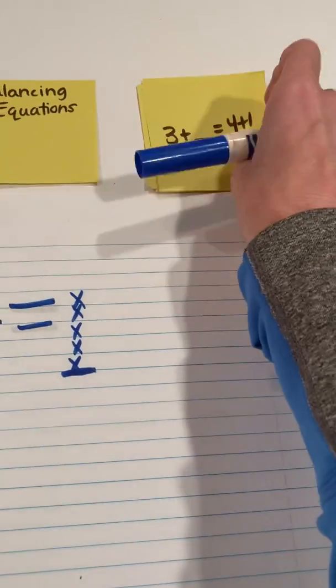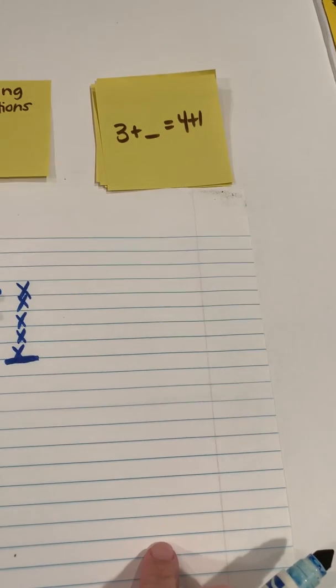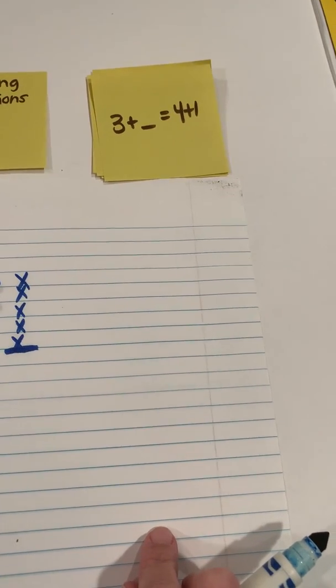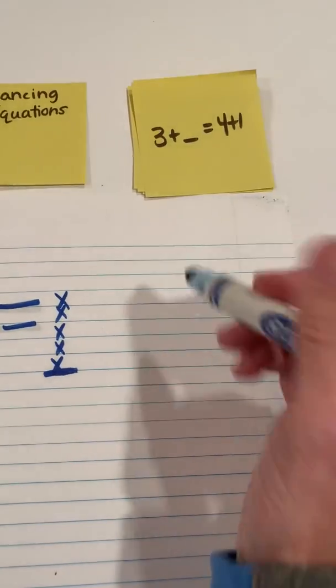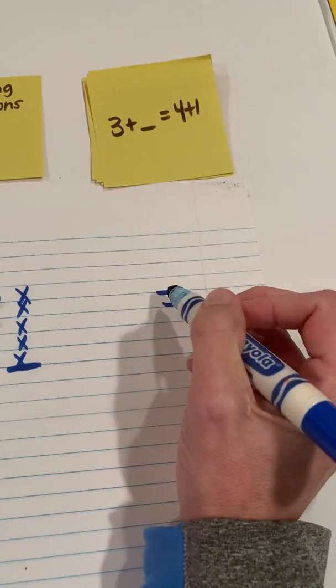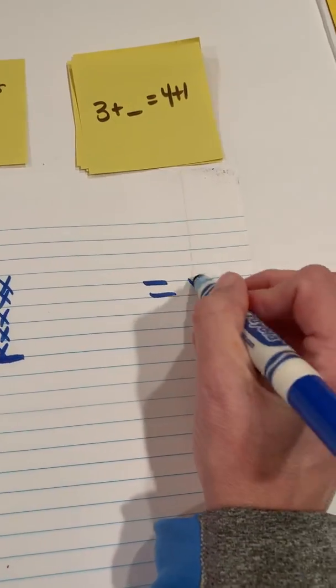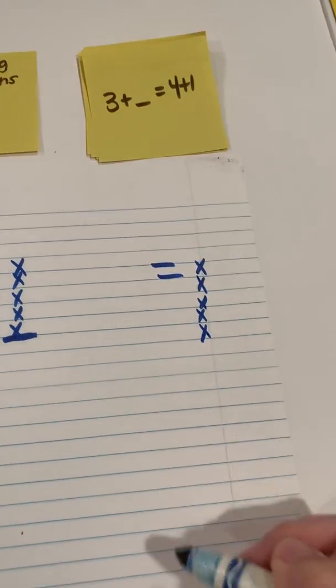And then our last one, we've got 3 equals—I'm sorry—3 plus what equals 4 plus 1. We're trying to find the missing addend. So we're really going to think about this. I'm going to go ahead and represent 4 plus 1, and then I'm going to start off with my 3.